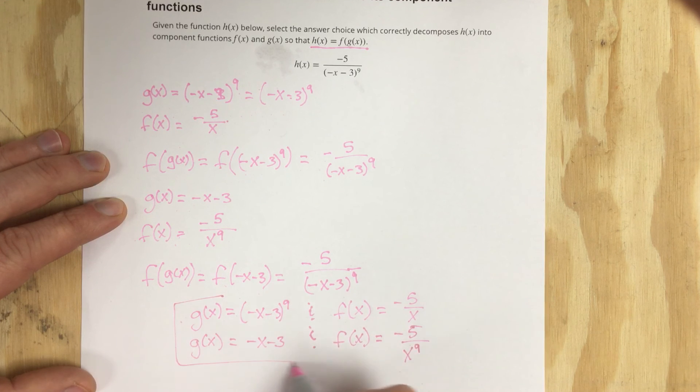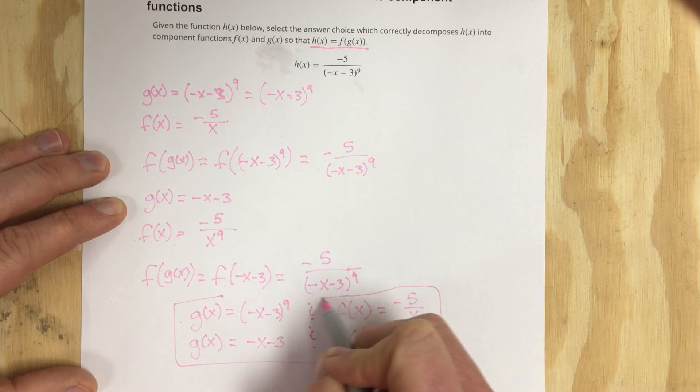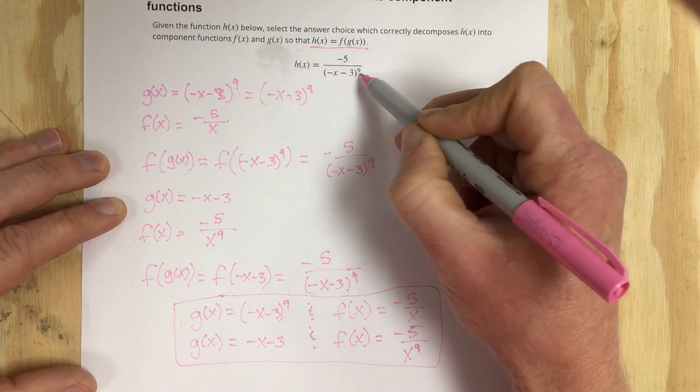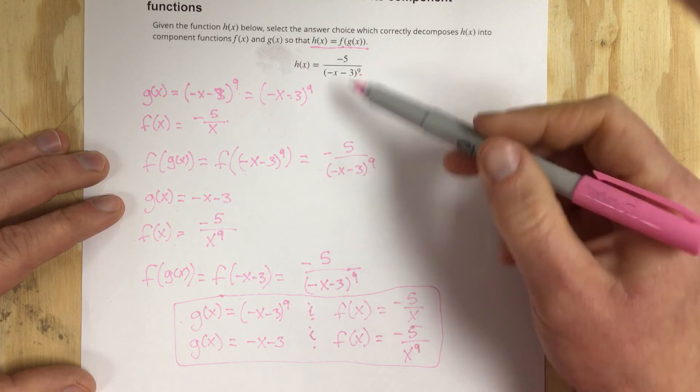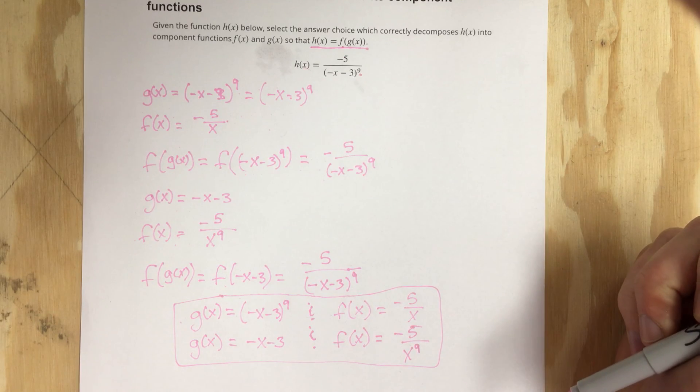So those are the two options that I have for decomposing this h of x function. Basically I'm trying to split that into two different functions that were composed to equal our h of x function.